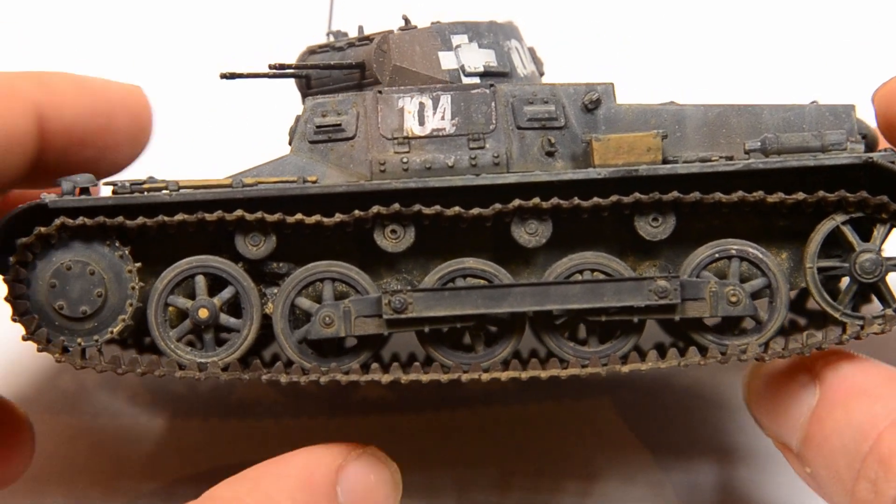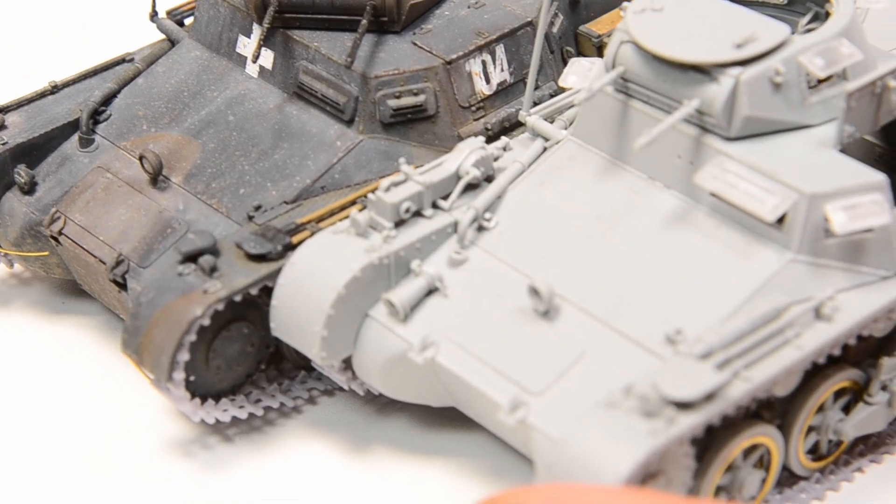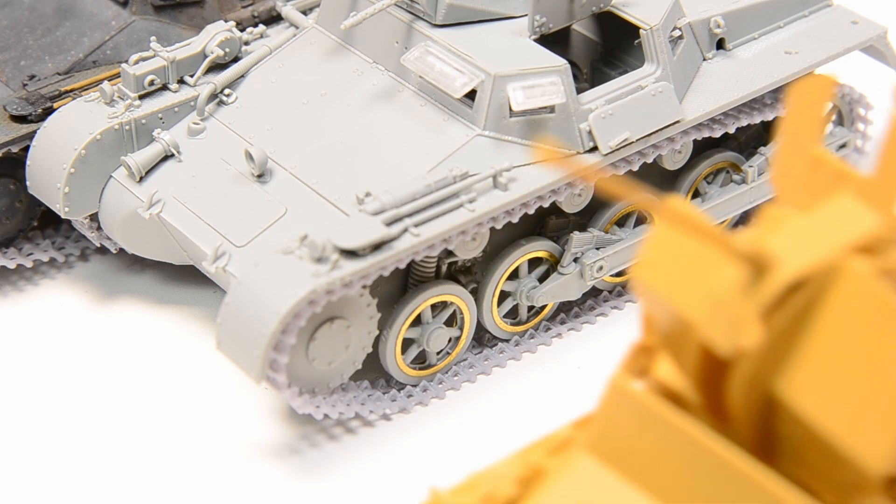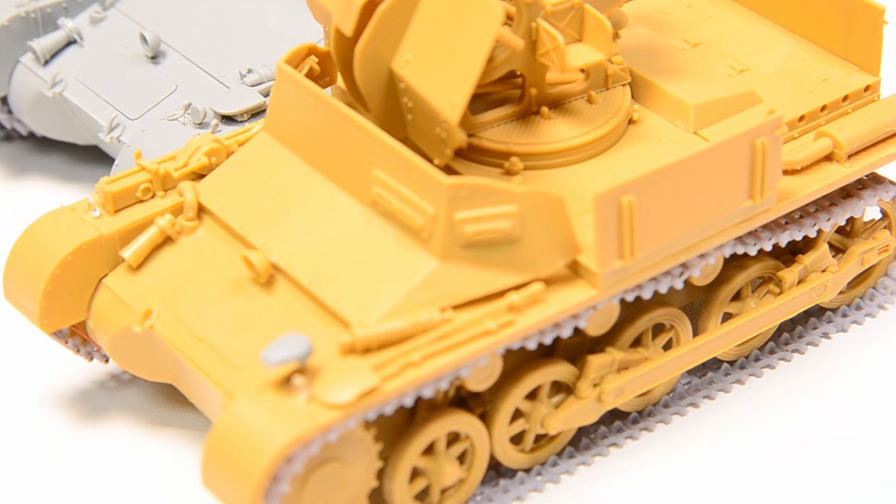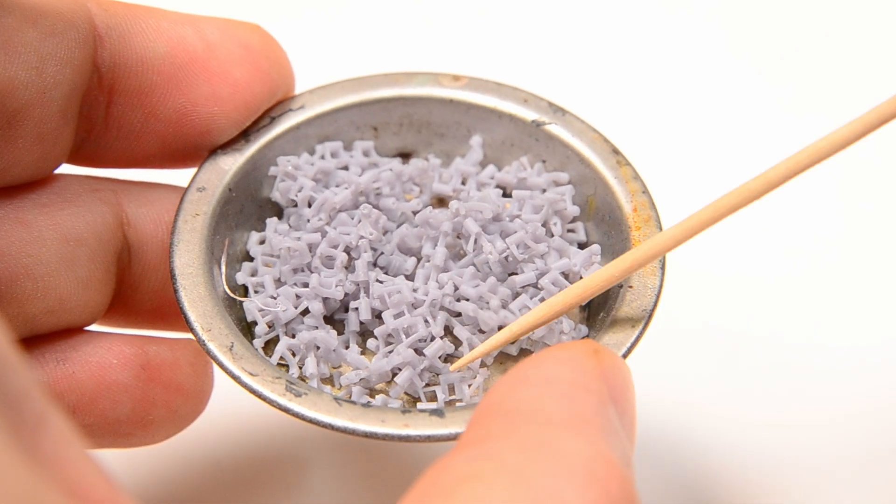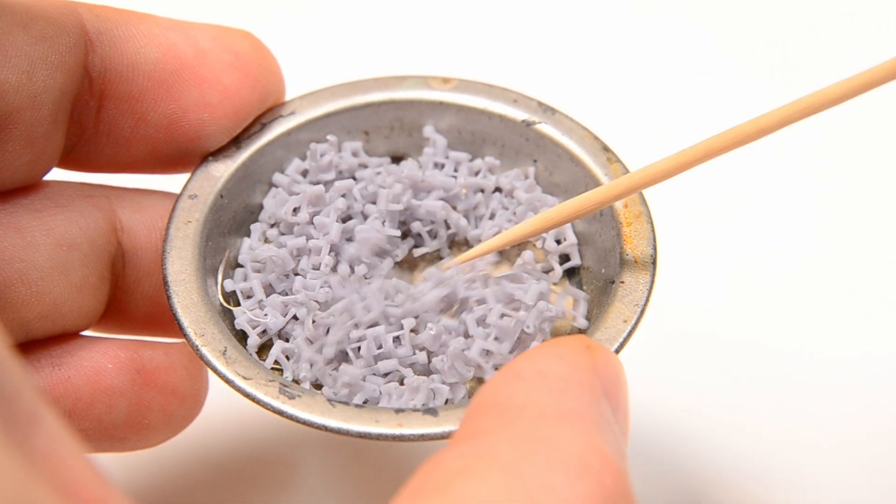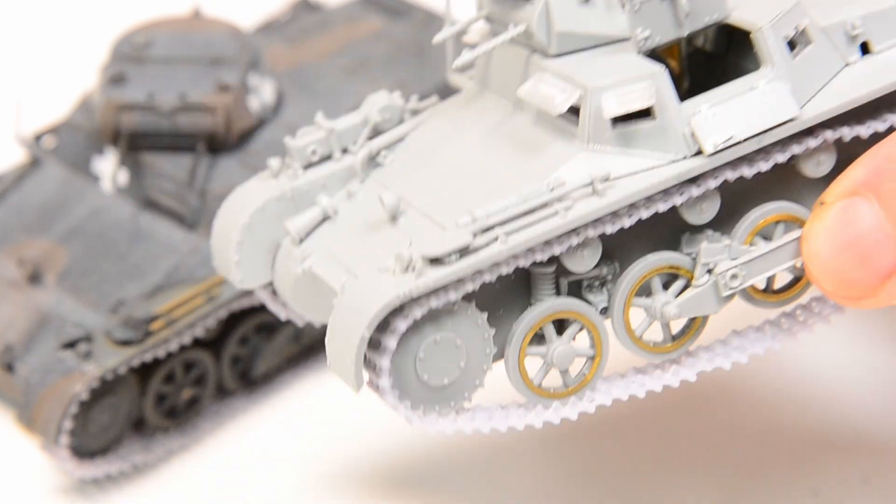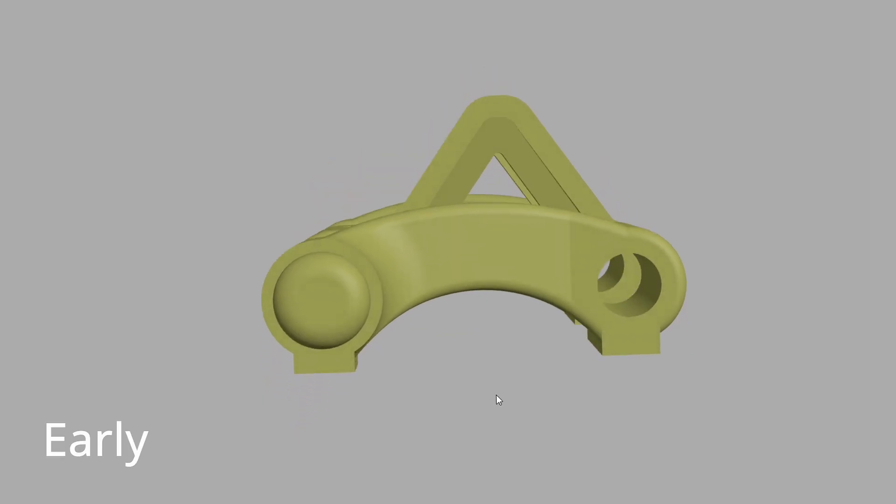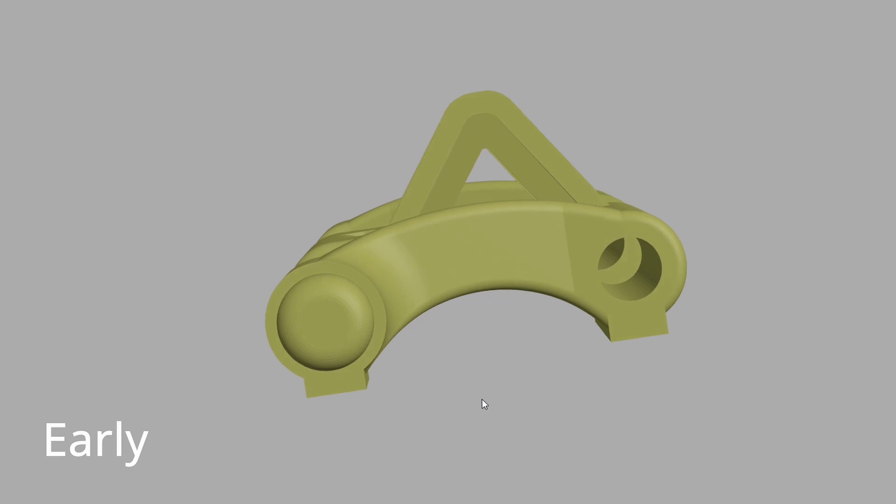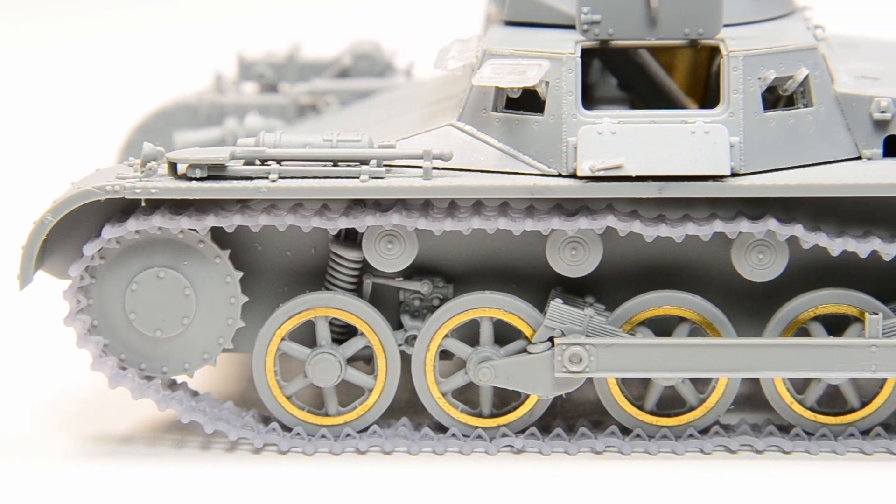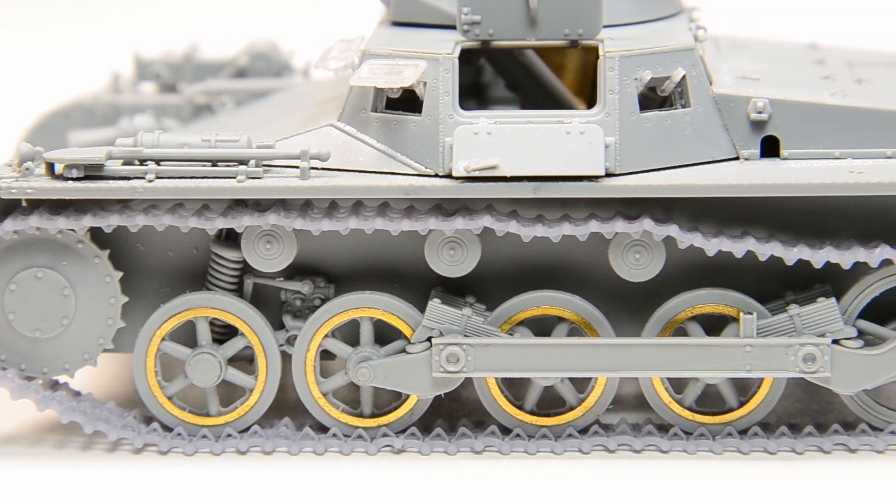In 1:35th scale we usually get only one type of track for all Panzer 1 based vehicles plus the Maultier half-track. That's not historically accurate but I can understand the reasons behind it. We can make out at least two variants of guide horns. The early one has a more triangular shape and its shell is broken through. When we look at period photographs, we can find this type of track on almost every Panzer 1 Ausführung A.